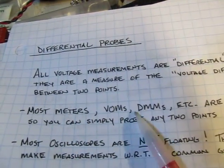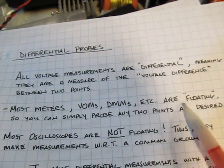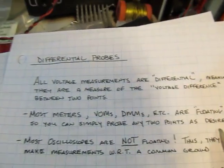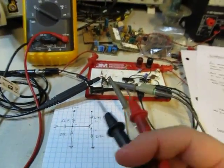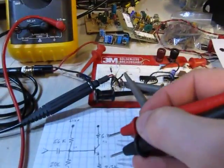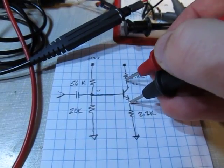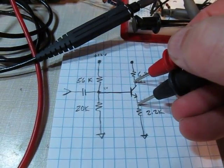When we make measurements with meters or DMMs and things like that, these instruments are floating so you simply can probe any two points that you desire. So for example, I could take these two probes here from my multimeter and I can simply connect them between any two arbitrary points within a circuit, like maybe between the collector and emitter of this little amplifier I have here, and go make that measurement.